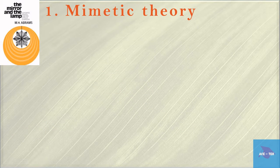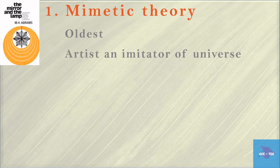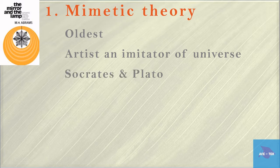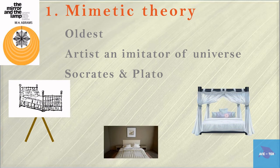The first one is mimetic theory. It is the oldest category of theory. Theories that fit in this category believe that the artist is an imitator of aspects of the observable universe. The theories of Socrates and Plato come under the mimetic theory. We all remember Plato's theory of mimesis, that art is an imitation of life and that idea is the ultimate reality.